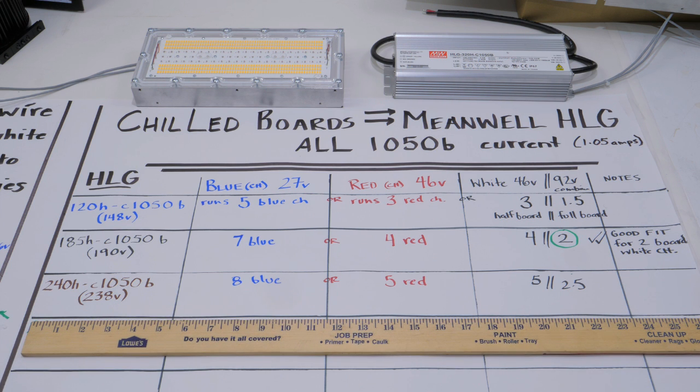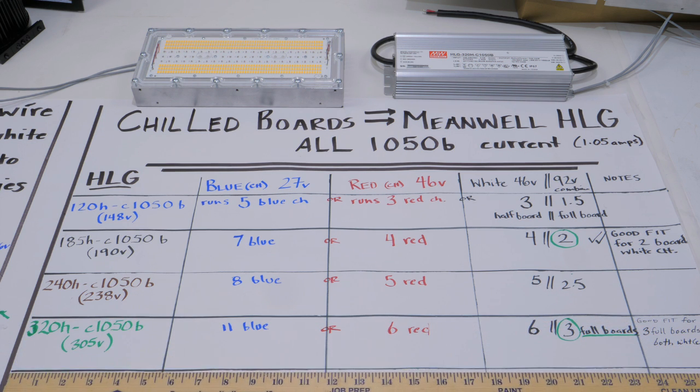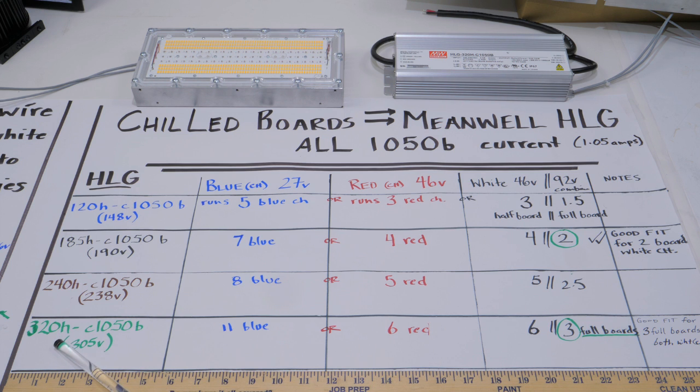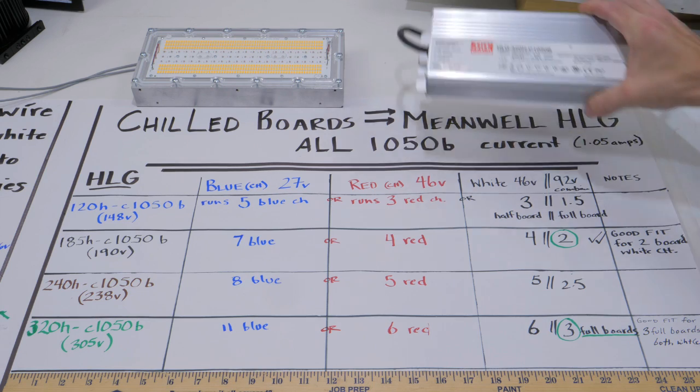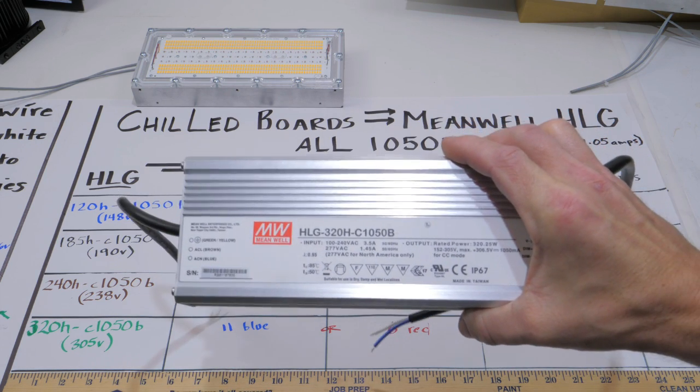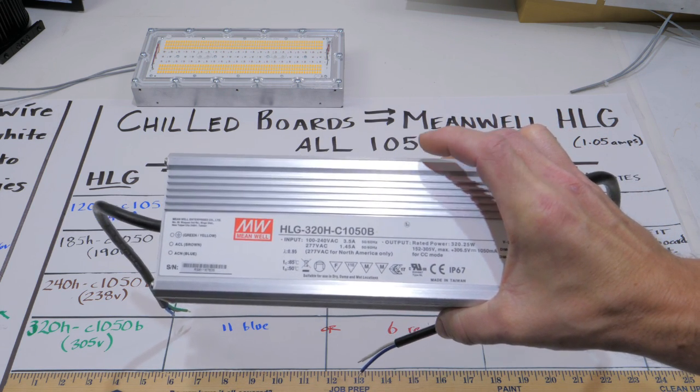As we bump up into the HLG 240, which is actually like a 250-watt capable driver, you got 238 volts. It's an okay fit but it runs odd numbers, so if you're running five boards or something, it's worth considering, but I'm just going to gloss over it for now.